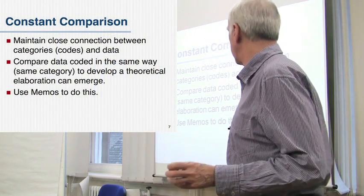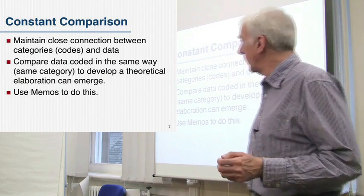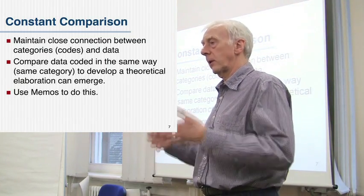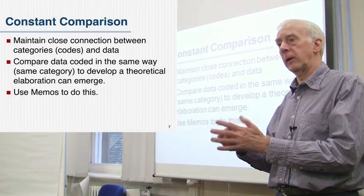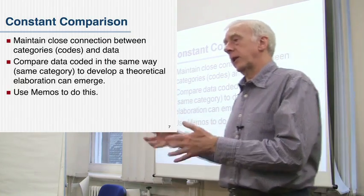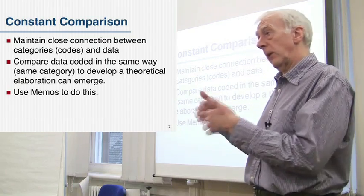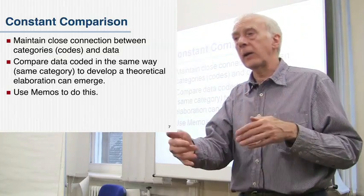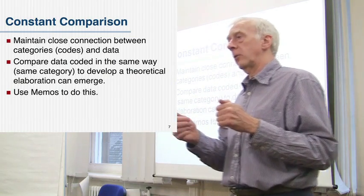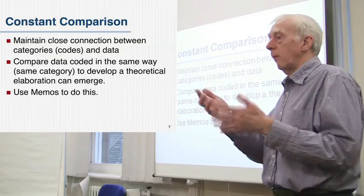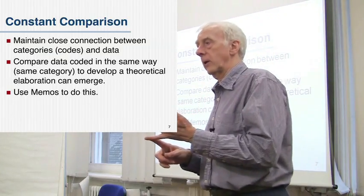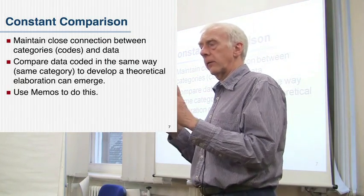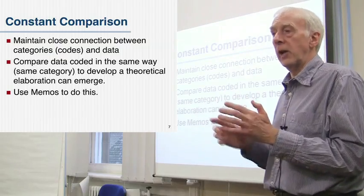Constant comparison is a way of maintaining a connection between the codes you've got and the data you're looking at - the codes, the ideas you're developing about what is happening in the text, and the data itself. Every time you get a new passage that appears to be about some topic that you've coded, you compare that with the other data you've coded the same way. Think back to the other cases, the other occasions on which that particular code was used and reread it. Ask yourself: am I being consistent in my application of that code, am I applying it the same way, so that it has some kind of core of meaning shared between the coded texts.